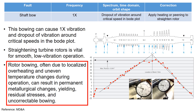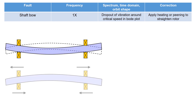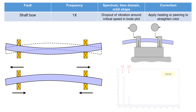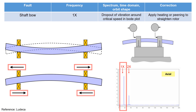Rotor bowing, often due to localized overheating and uneven temperature changes during operation, can result in permanent metallurgical changes, yielding, residual stresses, and uncorrectable bowing. A bowed shaft can cause axial opposed forces on the bearing, which can be detected in the vibration spectrum as 1x in the axial vibration.